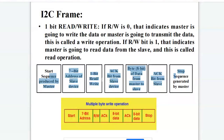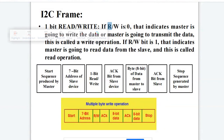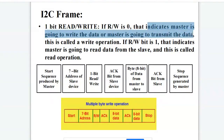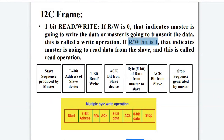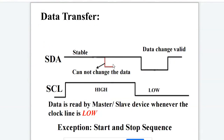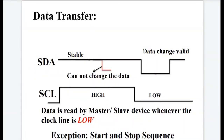This is how an I2C frame looks for a single byte write operation. When the read/write bit is zero, it indicates the master is going to write or transmit data — this is called a write operation. When the read/write bit is one, the master is going to read data from the slave device — this is called a read operation.